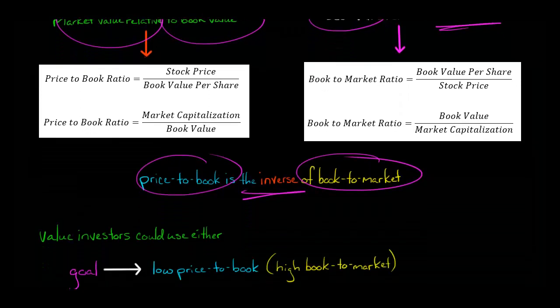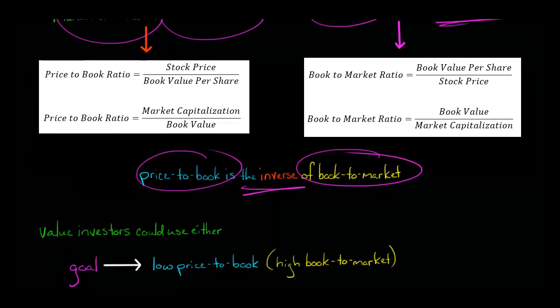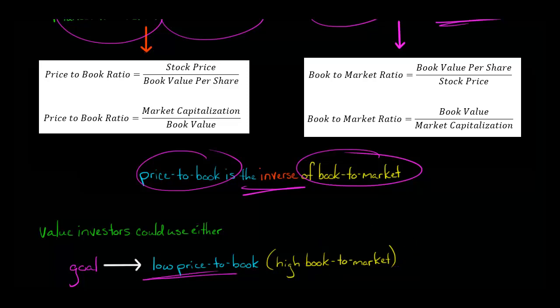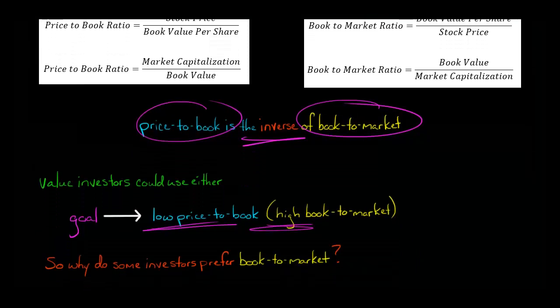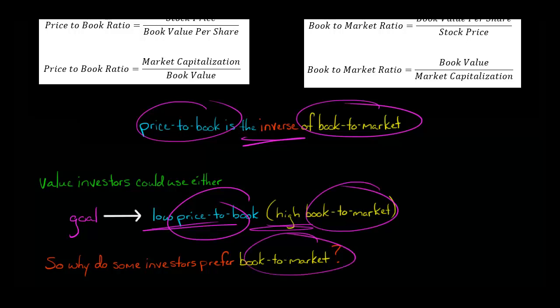So if you're a value investor and you're looking to invest in companies that are a bargain, you could either use the price-to-book ratio, in which case you'd want companies that have a low price-to-book ratio, or alternatively, you could use the book-to-market ratio, in which case you'd want to look for companies that have a high book-to-market ratio. So it would seem like these are interchangeable — just personal preference. You could use price-to-book, you could use book-to-market, but some investors have a preference for book-to-market.